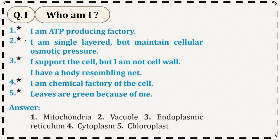Who am I? The first question is: I am an ATP producing factory. The answer is mitochondria. I am a single layer but I maintain cellular osmotic pressure.